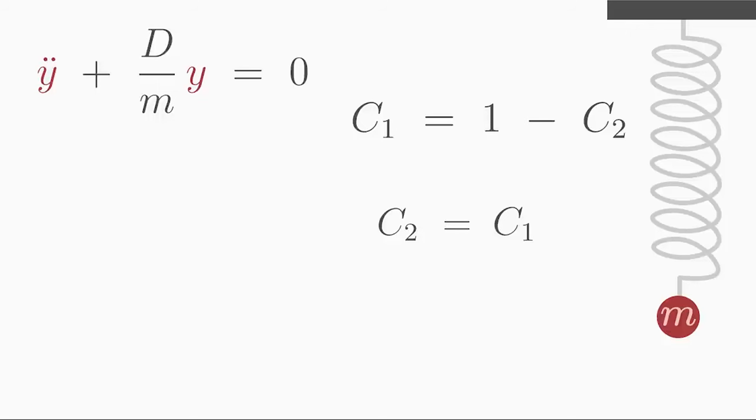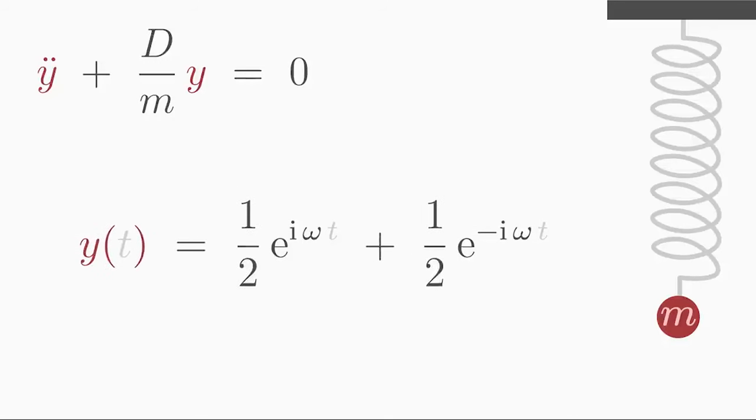So we know that c2 must be equal to c1. Nice. Let's replace c2 with c1 to determine concrete value for the constants. The equation results in c1 is equal to one half. Since c1 and c2 are equal, c2 must also be equal to one half. Insert one half into our general solution.